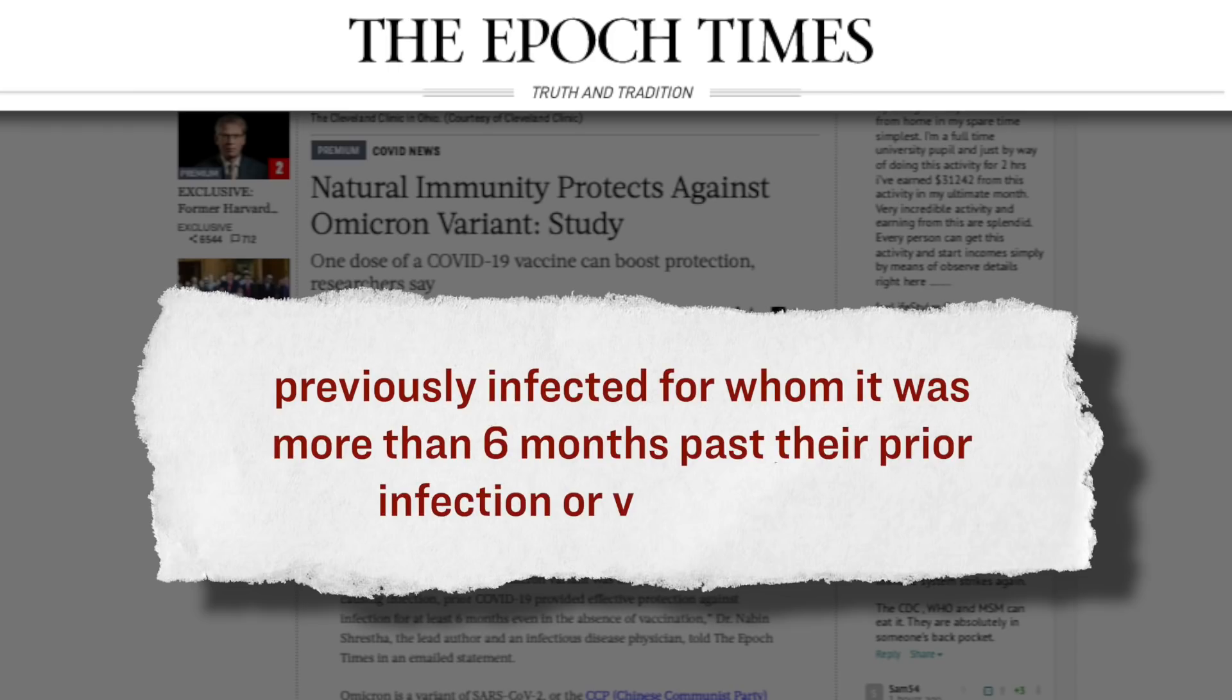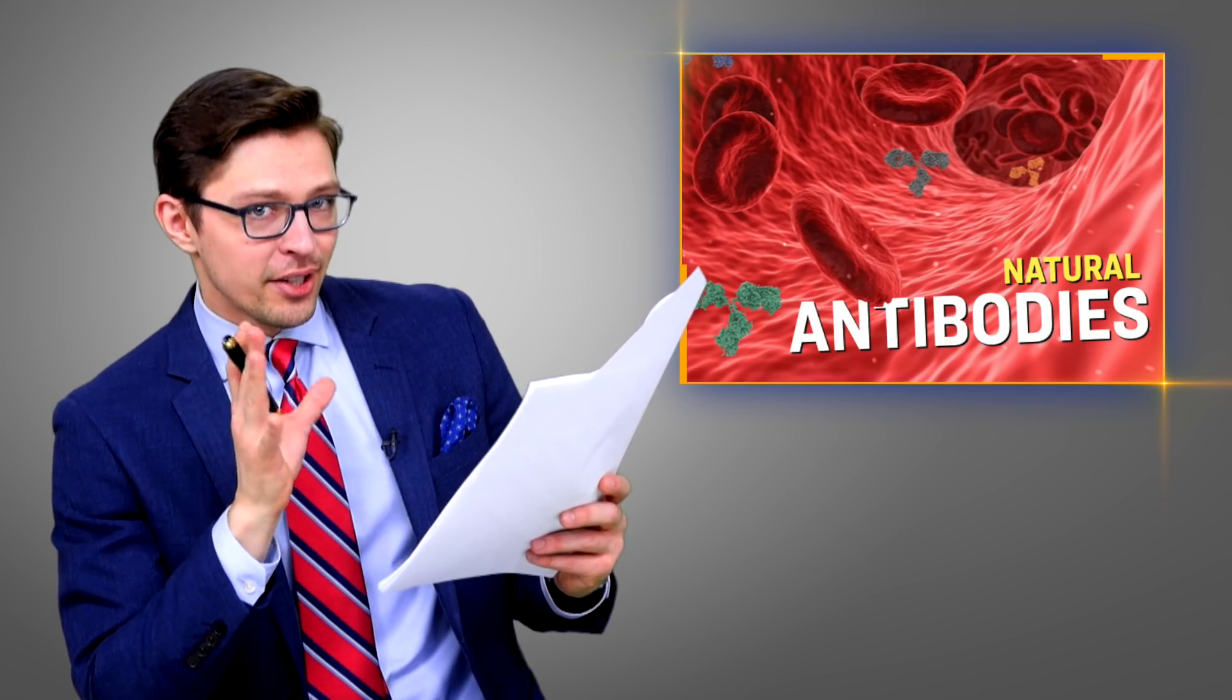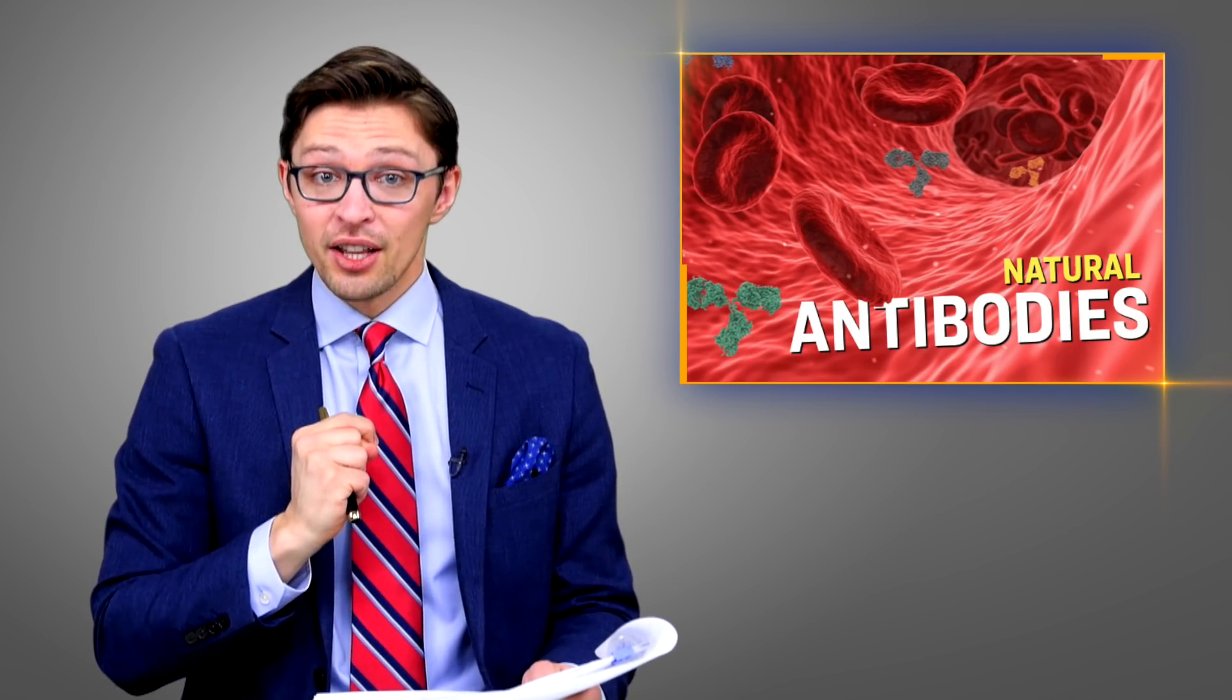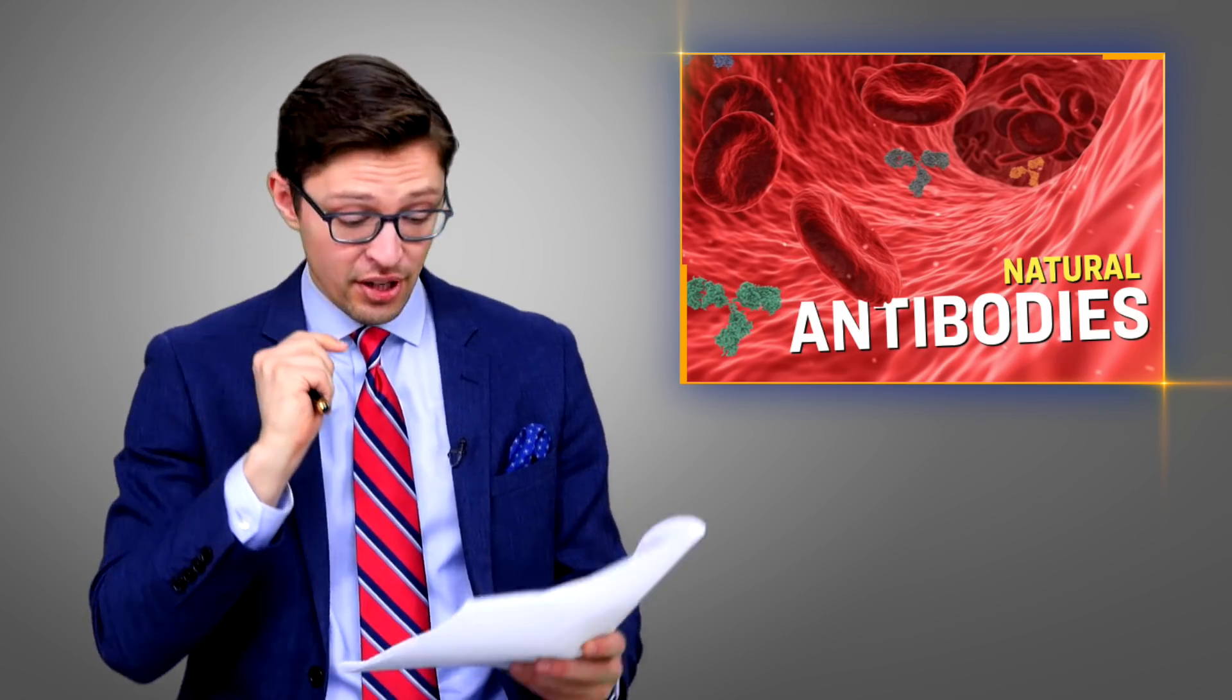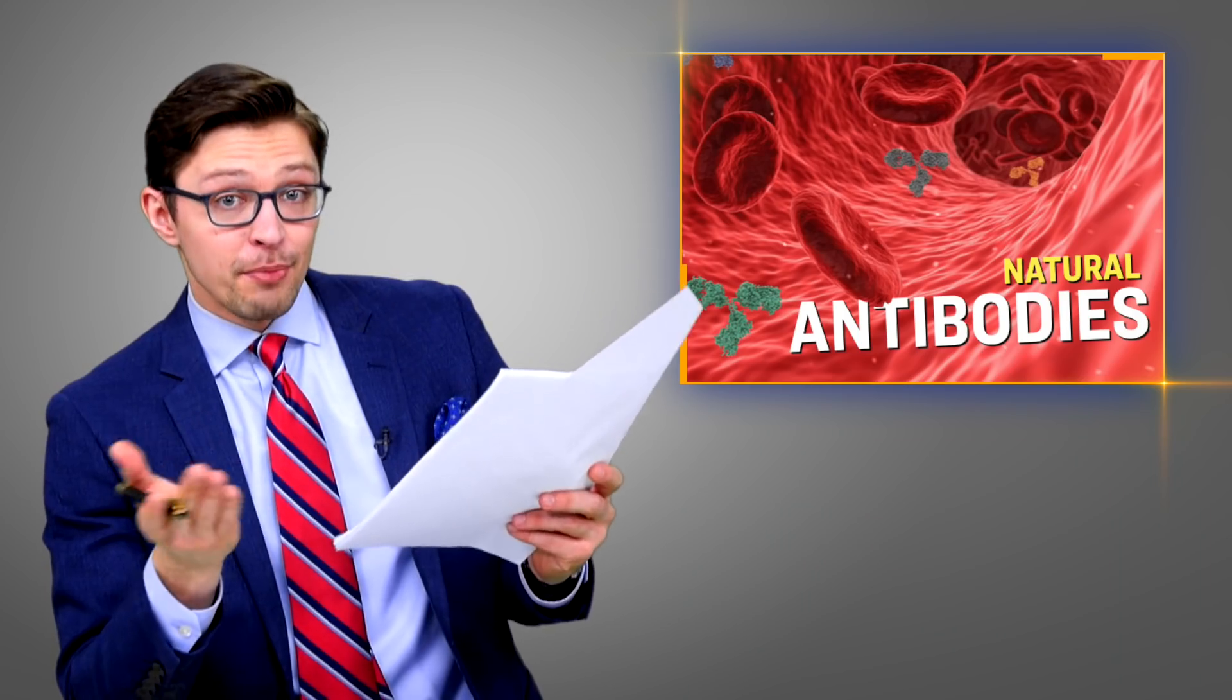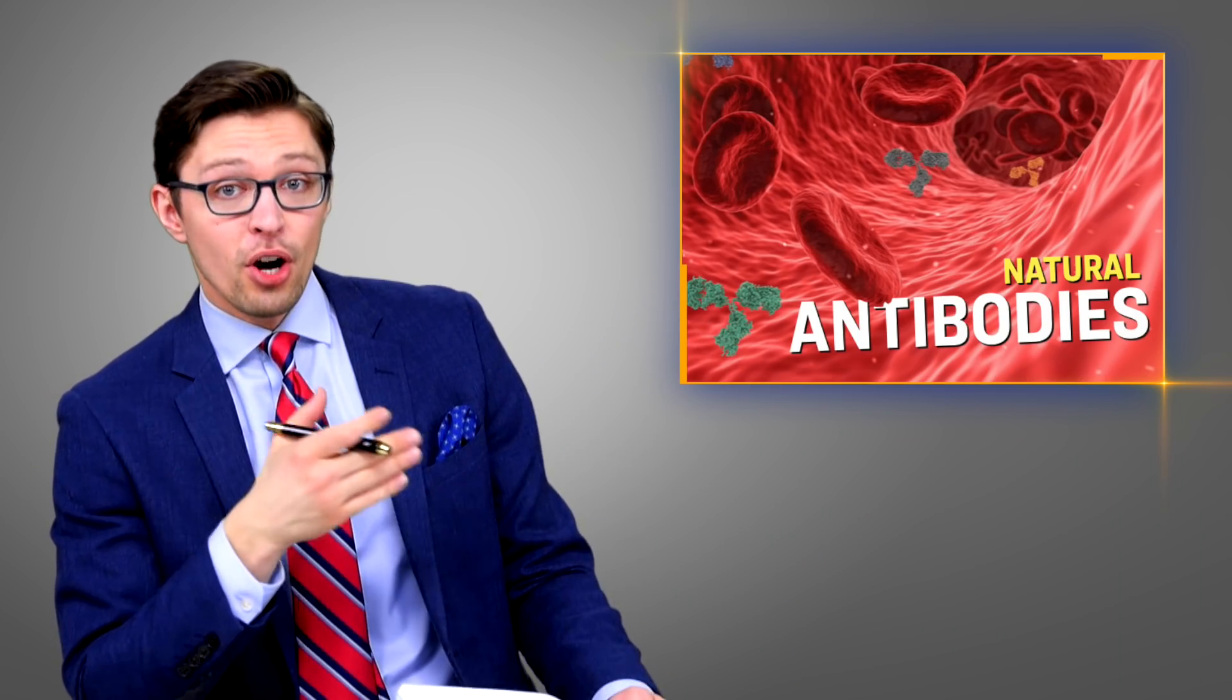Here's where things get a little curious, because the researchers also found that if the naturally immune individual got two doses of the vaccine instead of just one dose, their chances of actually getting the virus again increased. Here's specifically what they wrote: 'Among those with natural immunity, receiving two doses compared to one dose of vaccine was associated with higher risk of COVID-19,' which is curious.